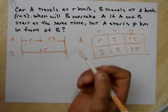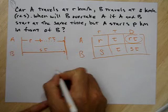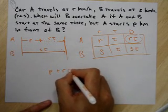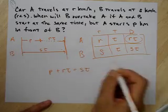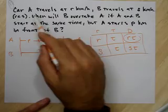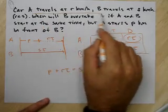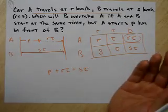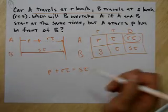But we have an equation here because we know that these two distances are equal. So I can say this plus this is this. P plus RT equals ST. I'm trying to find the time. That's what we're trying to find. When will B overtake A? They start at the same time, but A starts P kilometers. So we're trying to find this T and how long. So let's solve for T.